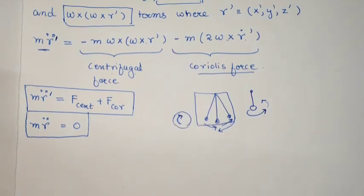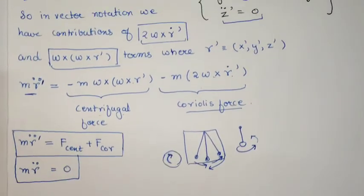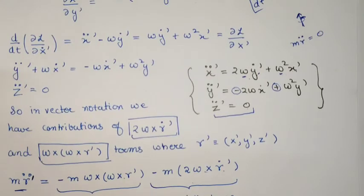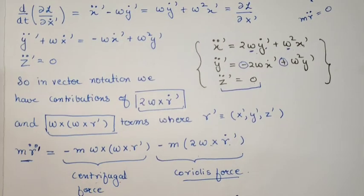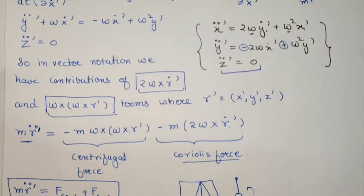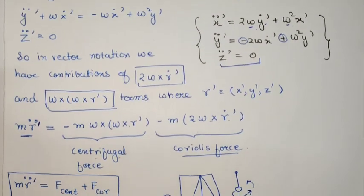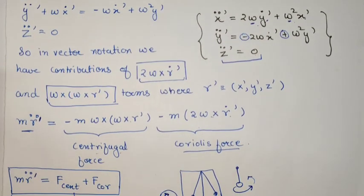In this video we discussed coordinate change and how the Lagrangian behaves under it — specifically that the Euler-Lagrange equations keep the same form, leaving the equations of motion unchanged in the new coordinates.